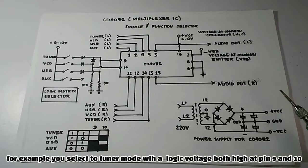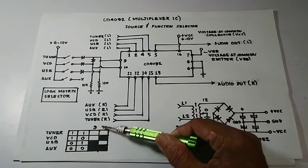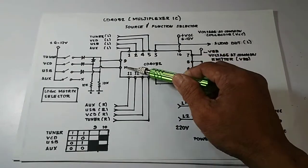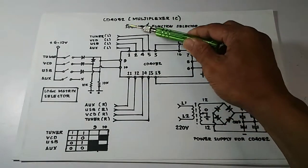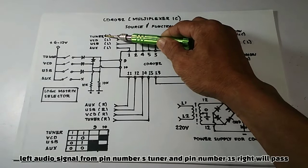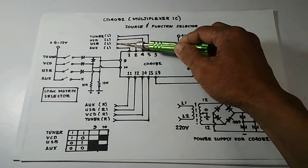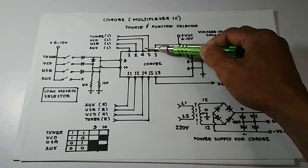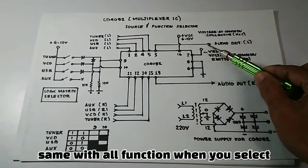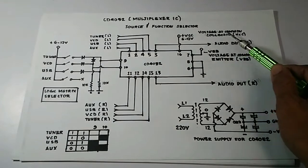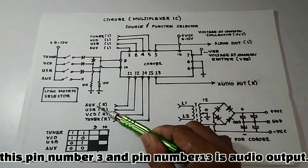For example, you select a tuner mode with logic voltage both high at pin 9 and 10. The left audio signal from pin number 5 (tuner) and pin number 15 (right) will pass. The same applies to all functions when you select. Pin number 3 and pin number 13 is the audio output.